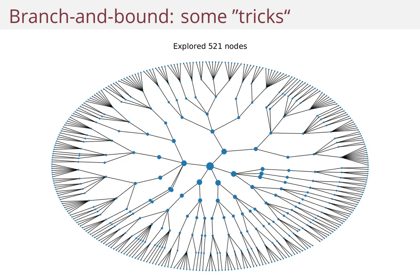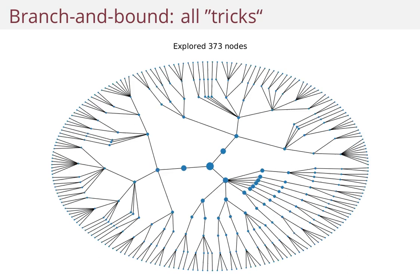If I implement some tricks, I explored 521 nodes. If I implemented every trick and tweaked it to look at what achieves the best performance, I actually only ended up exploring 373 nodes.